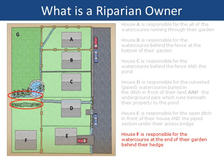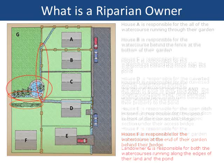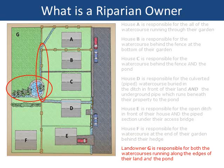House F is responsible for the watercourse at the end of their garden behind their hedge. And landowner G is responsible for both the watercourses running along the edges of their land and the pond.